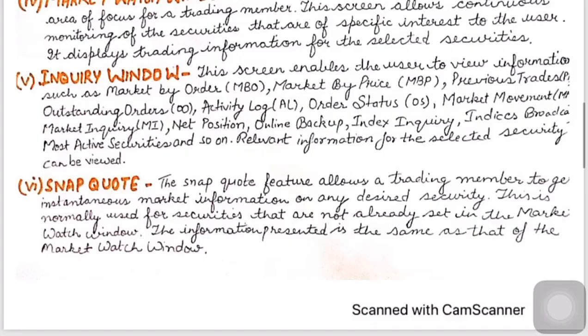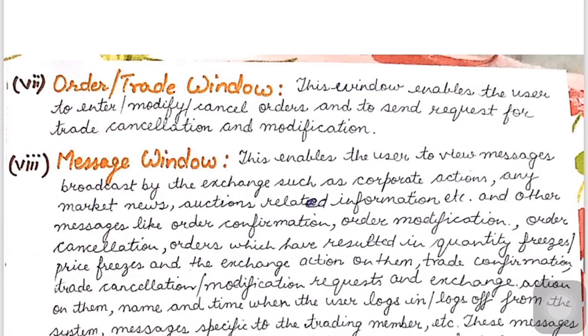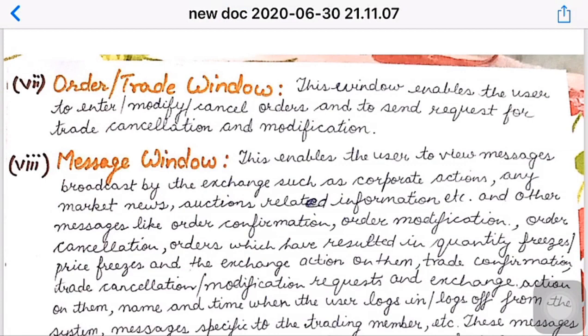Then comes the order trade window. In this window, the user can enter, modify, and cancel orders, and can also send requests for trade cancellation and modification.